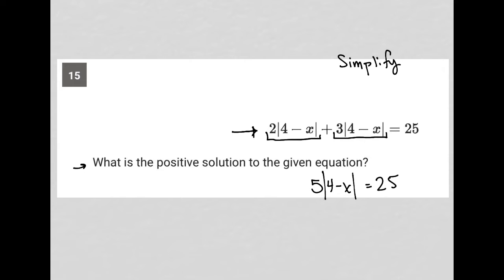And then I can divide both sides of this equation by five in an effort to isolate my absolute value. So I'm left with the absolute value of four minus x is equal to five. Let's just write this up here for more space. Four minus x, not four x.